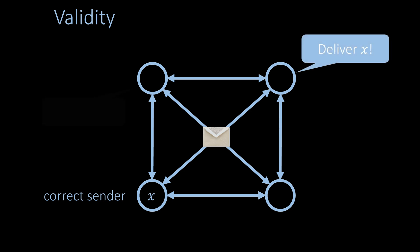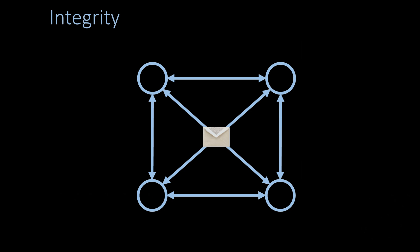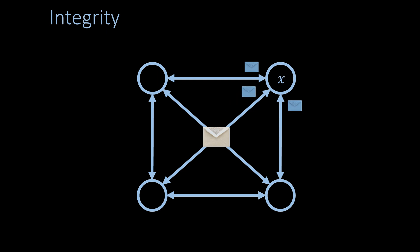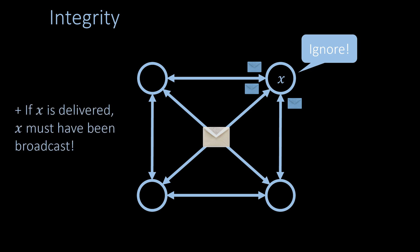then exactly this value will eventually be delivered at every correct node. What if the sender is faulty? In this case, it is possible that no message is ever delivered because the sender may crash right at the start of the execution, so there is nothing we can do in this situation. Lastly, the integrity property says that if a value has been delivered, no matter what happens in the network, no other value will be delivered. In other words, at most one message can be delivered in every protocol execution. In practice, a different instance of the protocol is used to deliver multiple messages. Moreover, the integrity property often includes the requirement that any delivered message must have been broadcast.